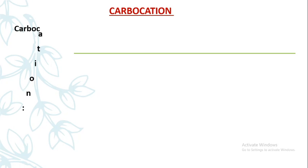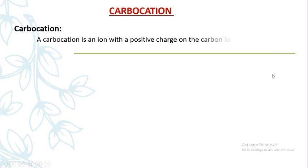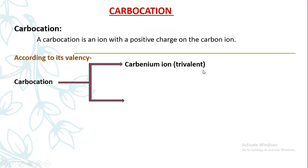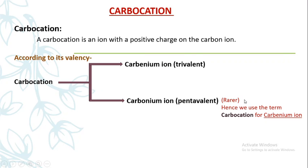Our first intermediate is the carbocation. The carbocation is an ion with a positive charge on the carbon ion. It is classified into two types according to its valency: the carbenium ion, which is trivalent, and the carbonium ion, which is pentavalent. The pentavalent carbonium ion is very rare, so we generally use the term carbocation to refer to the carbenium ion.